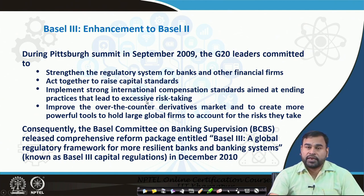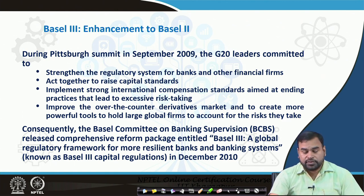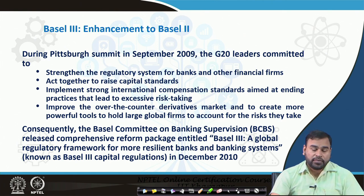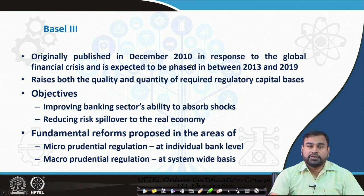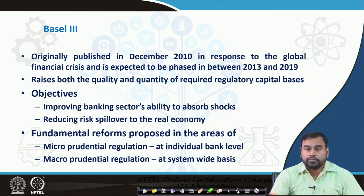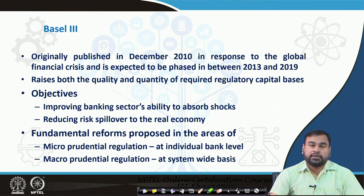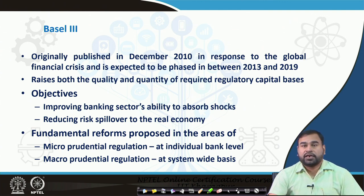The Basel Committee on Banking Supervision released a comprehensive reform package known as Basel 3 — a global regulatory framework for more resilient banks and banking systems. It was started in December 2010 and, with a series of modifications, came into force in 2013. From 2013 to 2019, in different phases, this had to be implemented in different countries, and the regulatory body's responsibility was to ensure all commercial banks followed the guidelines that Basel 3 recommended.